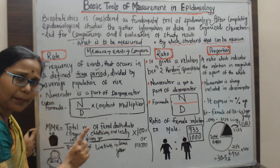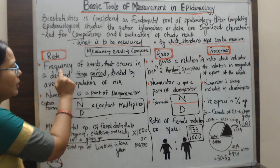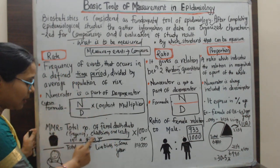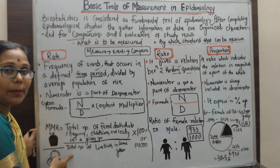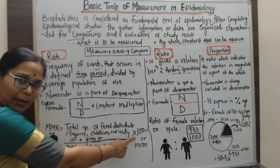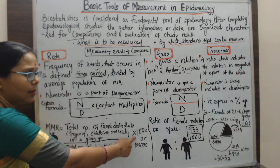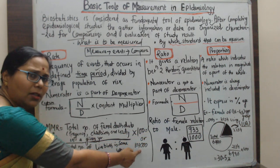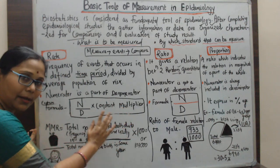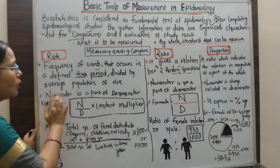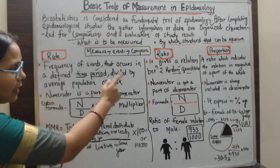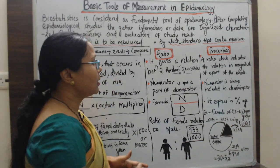So in MMR, the time factor is given — it is measured in a given year. The denominator is the total number of females who gave a live birth to a child, multiplied by a constant of 1,000, 10,000, or 100,000. Here the numerator is part of the denominator. That concludes the rate.